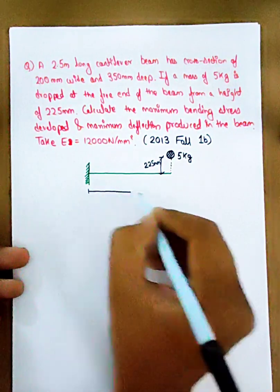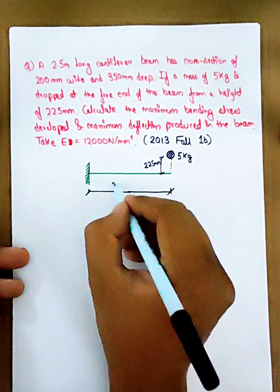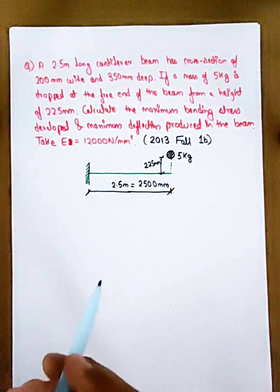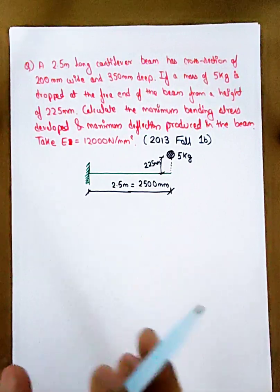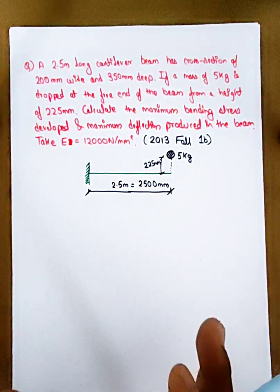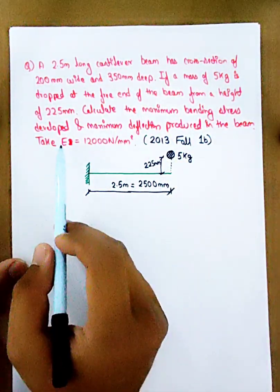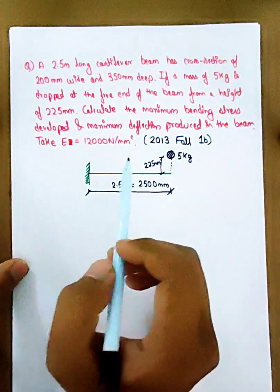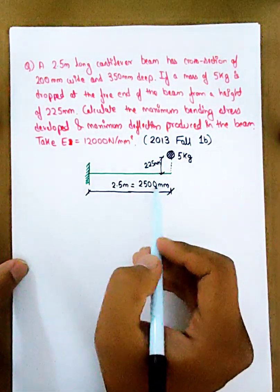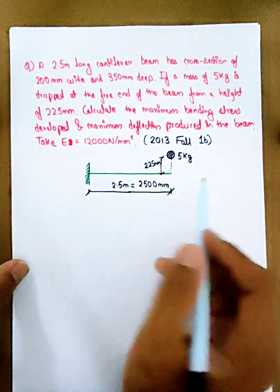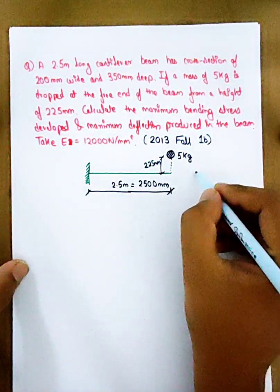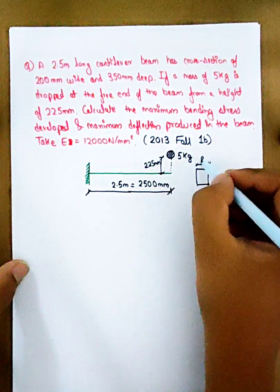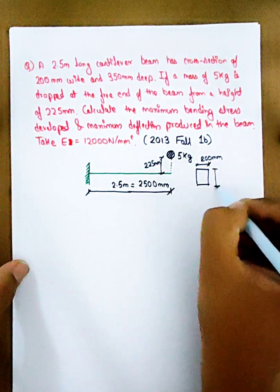We will work in consistent units: load in Newtons, length in mm, and E in Newton per mm². The beam dimensions are width 200mm and depth 350mm.